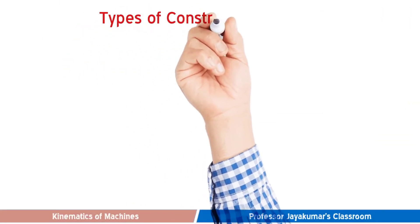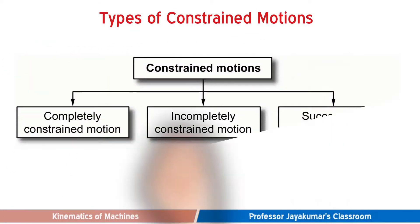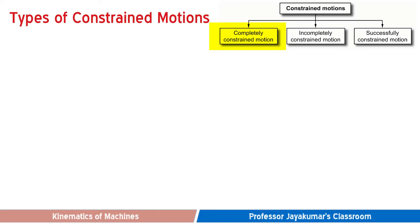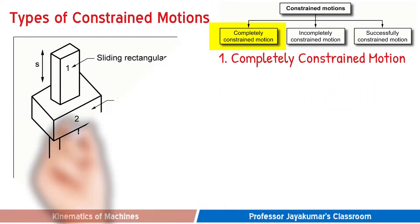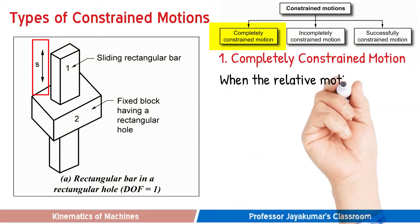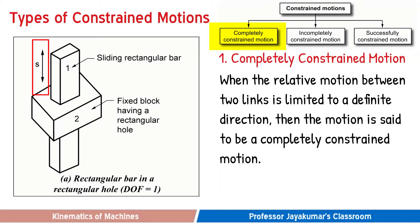The three types of constrained motions in kinematic pairs are: completely constrained motion, incompletely constrained motion, and successfully constrained motion. First, let us understand completely constrained motion. Consider the example shown here — a sliding rectangular bar moving in a rectangular hole. When the relative motion between two links is limited to a definite direction, then that motion is said to be a completely constrained motion.